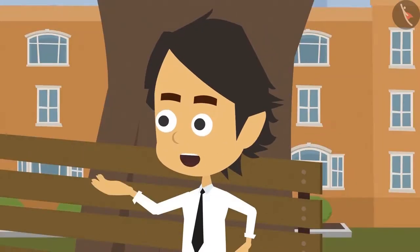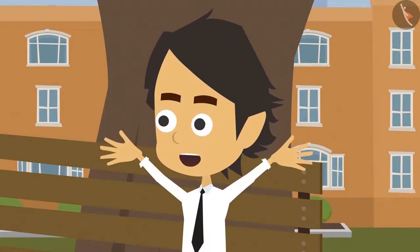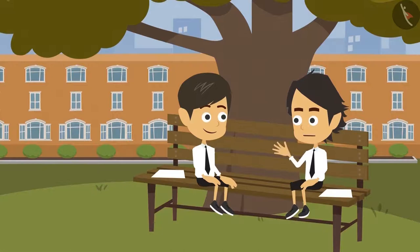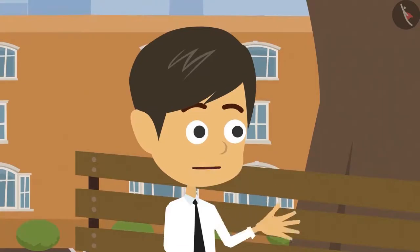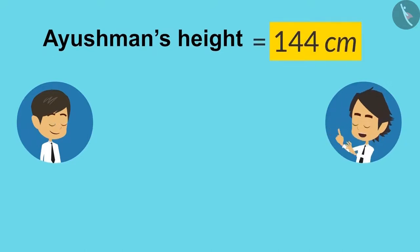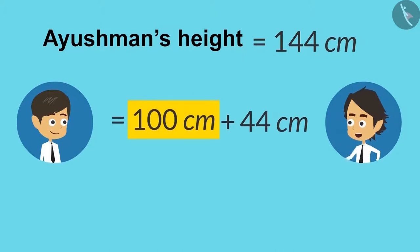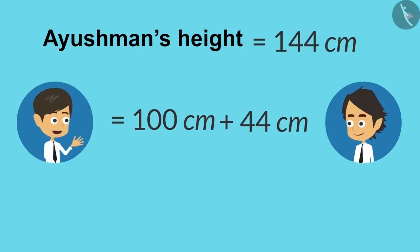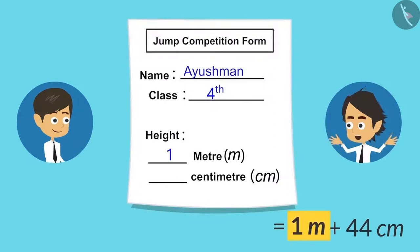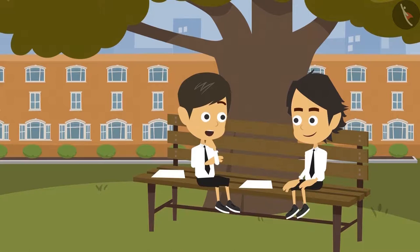Yesterday madam told us that one meter has 100 centimeters. So with this information, I can write my height in meters and centimeters. My height is 144 centimeters. Let's write it as 100 centimeters plus 44 centimeters. Now, 100 centimeters equals 1 meter, so we can write it as 1 meter 44 centimeters.